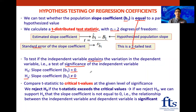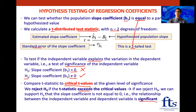The rest of the procedure: we compare our t-statistic to the critical t-values at our given level of significance. We reject the null hypothesis if the t-statistic exceeds the critical values. If we reject the null, we can support the alternative hypothesis — that the slope coefficient is not equal to zero — meaning the relationship between the independent variable and the dependent variable is significant.